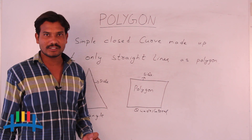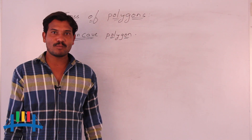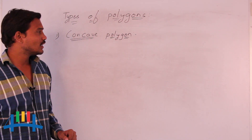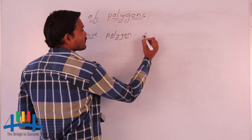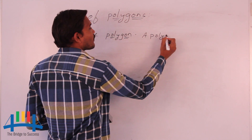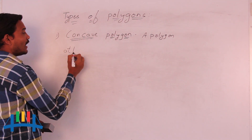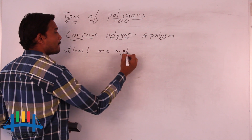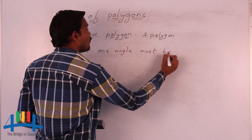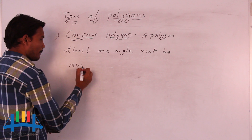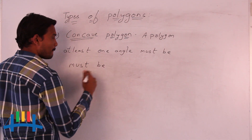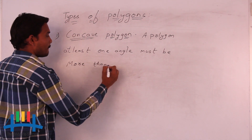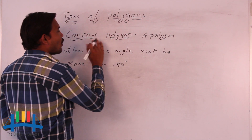Now we will discuss the types of polygons. The first type is the concave polygon. A concave polygon is a polygon in which at least one angle must be more than 180 degrees. Then we call it a concave polygon.